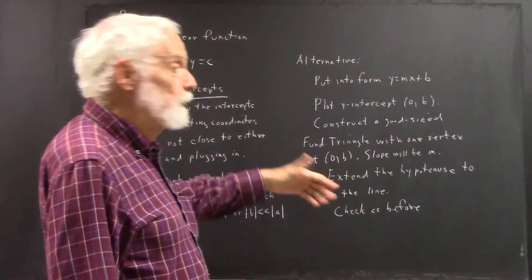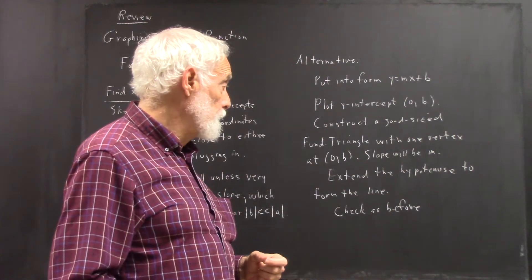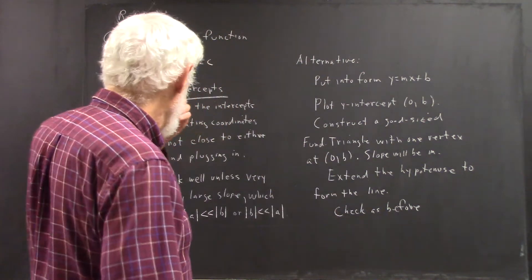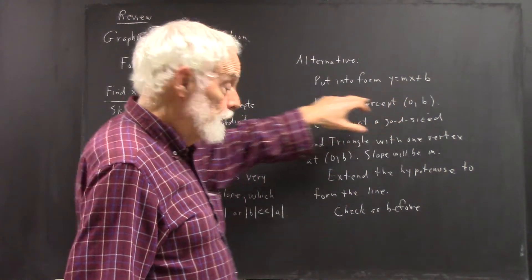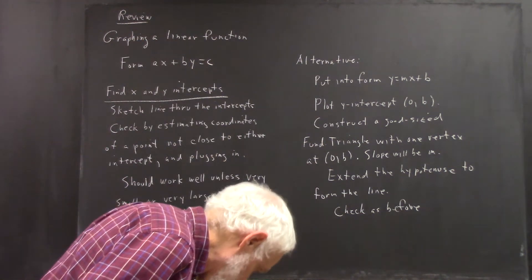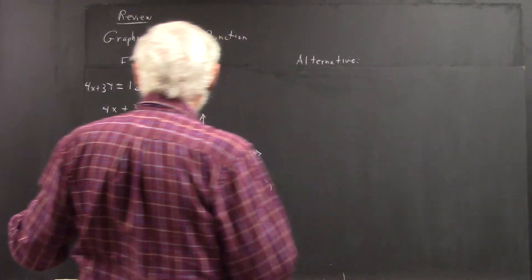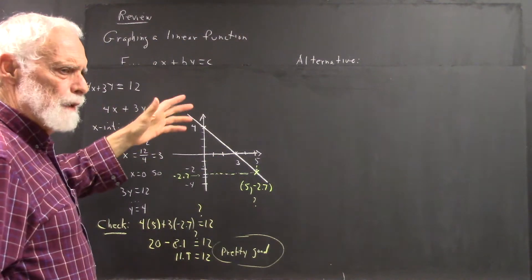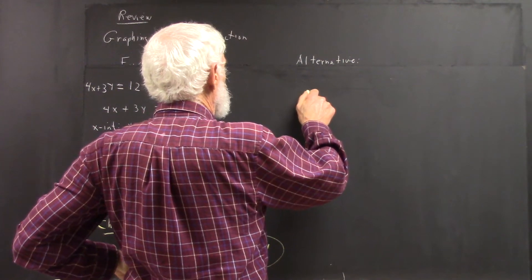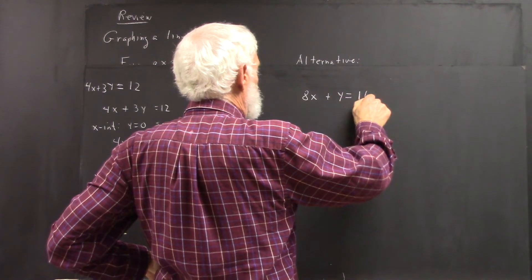And then we check as before. We find a point not too close to either of the vertices of the fundamental triangle and plug it in and see if it fits this original equation. Even if it fits this equation, you don't care, because this is the equation you're trying to fit. Now we take, I'm going to just illustrate it with an equation where you want to actually use it. Let's say you have 8x plus y equals 16.